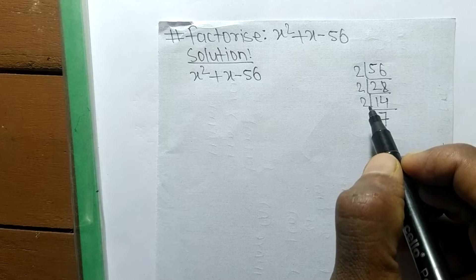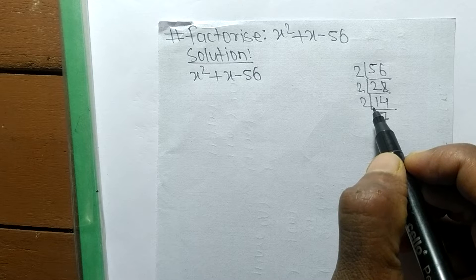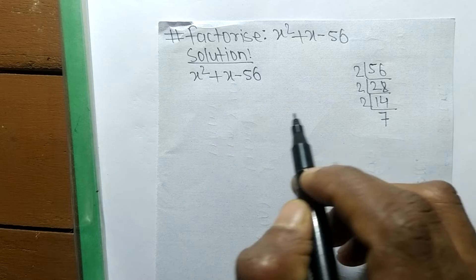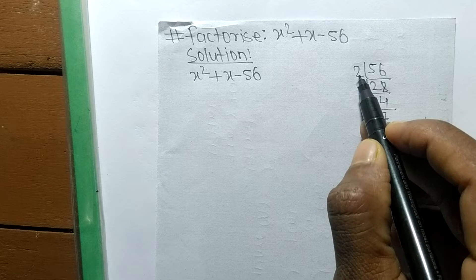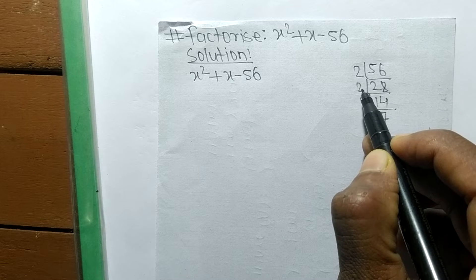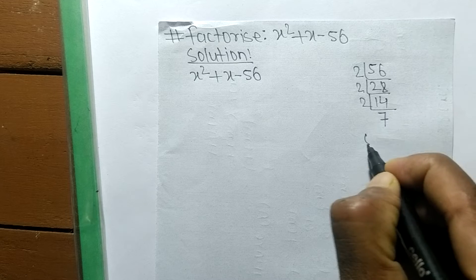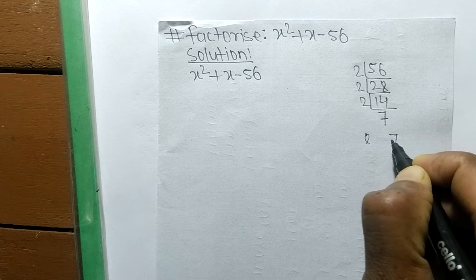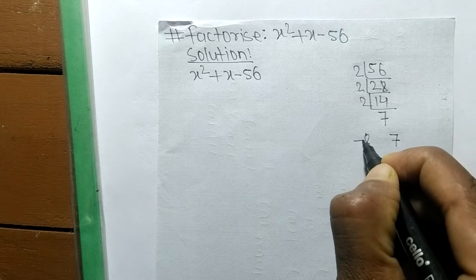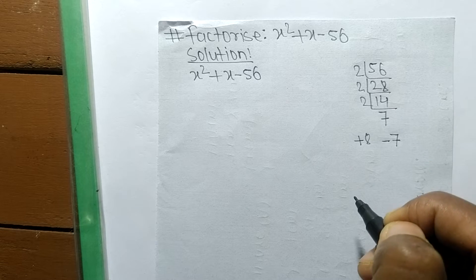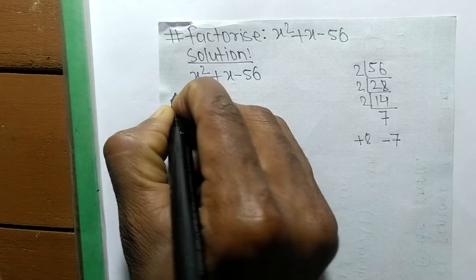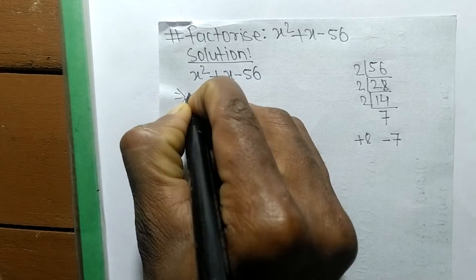By adding those factors we have to get the middle number, which is plus 1. Multiplying the first three factors: 2 times 2 is 4, times 2 is 8, and the remaining is 7. So plus 8 and minus 7 gives us plus 1.